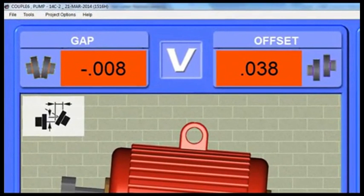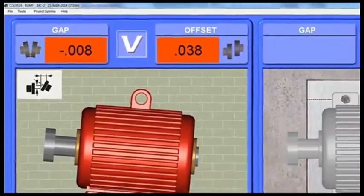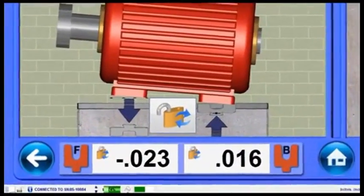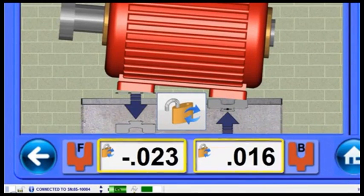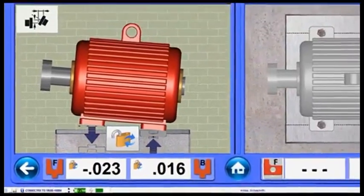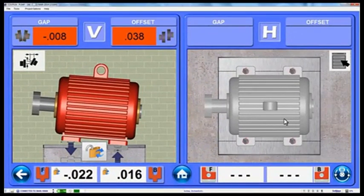At the top of the screen, step 5 shows the gap and offset values for either the vertical or horizontal alignment planes, both continuously updating with each move of the motor. At the bottom of the screen, Couple 6 shows the calculated shim and move values, which also update continuously. Arrows are also used to indicate whether to add or subtract shims and which way to move the motor.